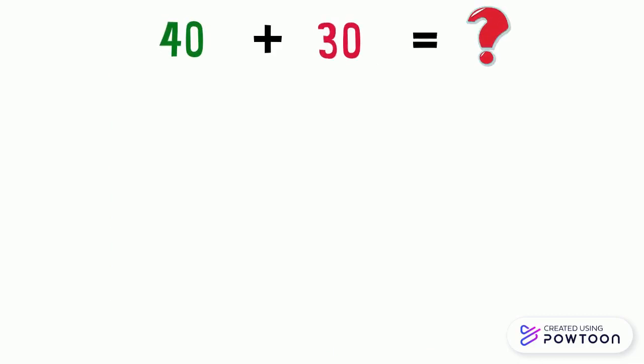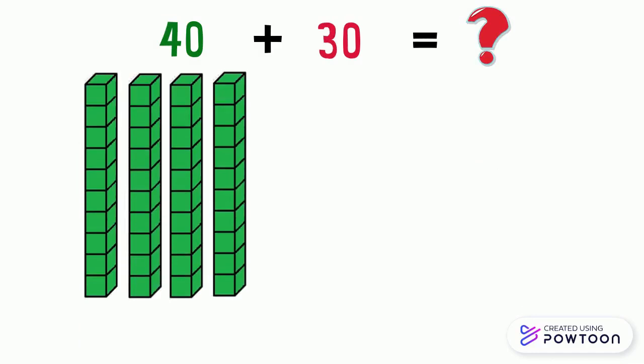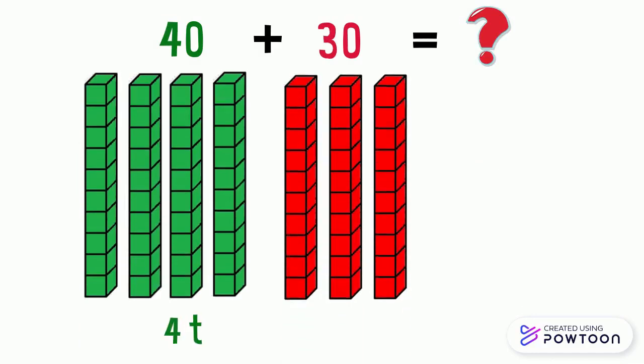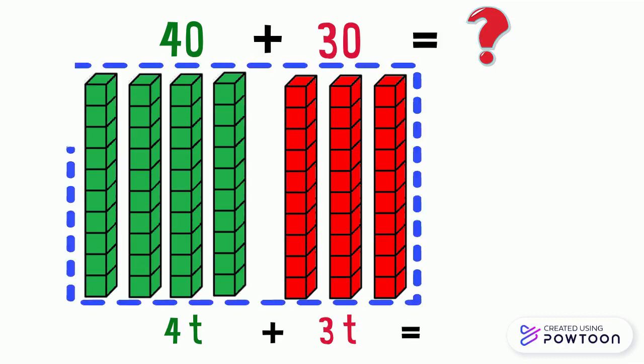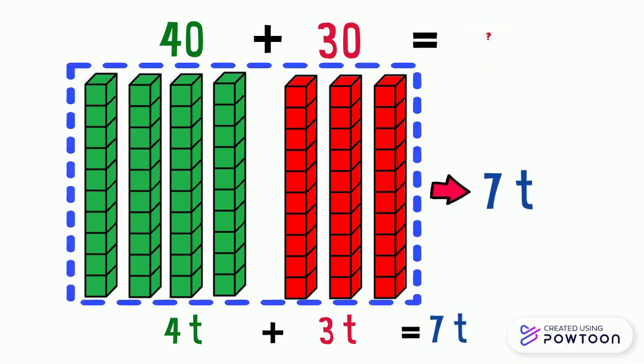What is 40 plus 30? The number 40 equals 4 tens. And the number 30 equals 3 tens. 4 tens plus 3 tens equals 7 tens. So, 40 plus 30 equals 70.